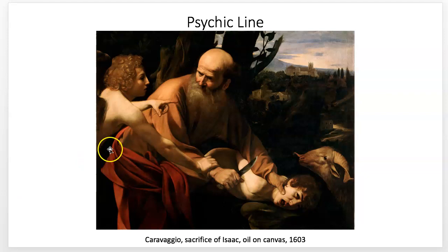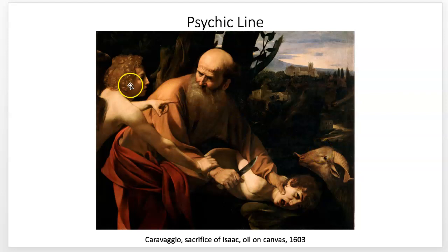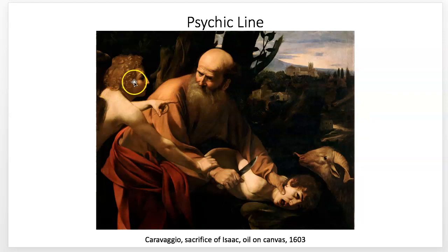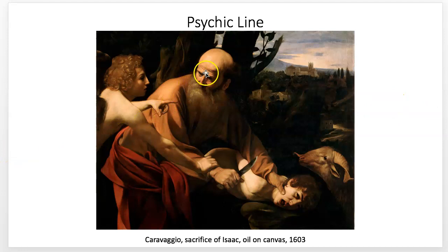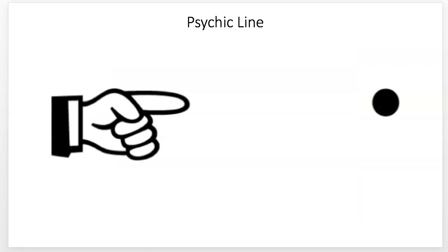Psychic line gets a little more esoteric. It's the way your brain connects things together like a line. This is Caravaggio from the 1600s — the narrative where Abraham is about to sacrifice Isaac, but the angel points out a ram instead. There are very strong psychic lines: Abraham looking at Isaac, his finger pointing to the ram, the ram looking back, and the knife connected to Isaac. Psychic lines come from pointing and eye direction.